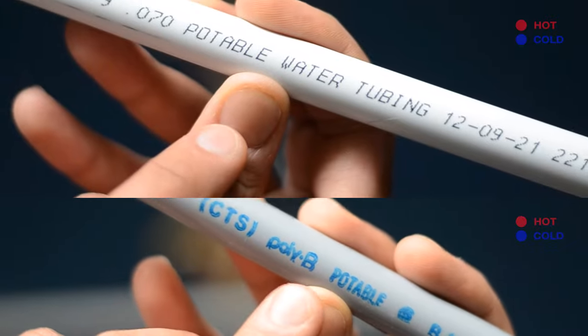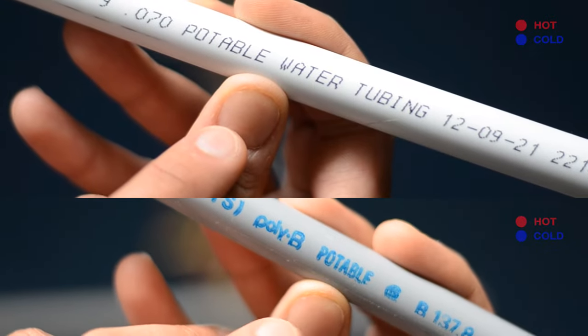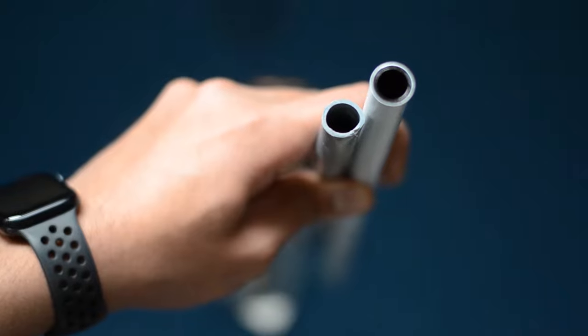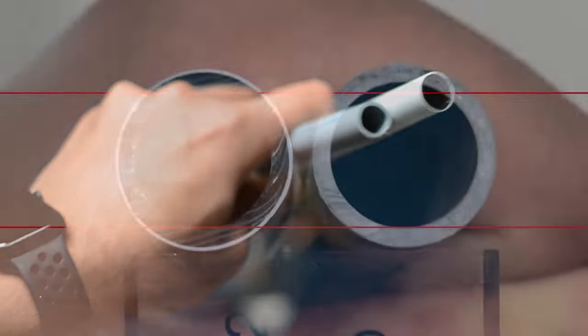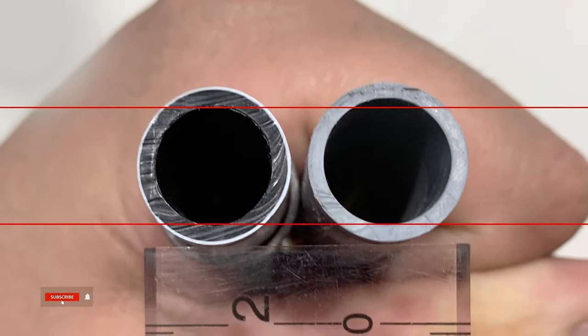Both poly B and pex are used in potable hot and cold water lines. If you look closely, inner diameter of poly B is larger than pex pipe.